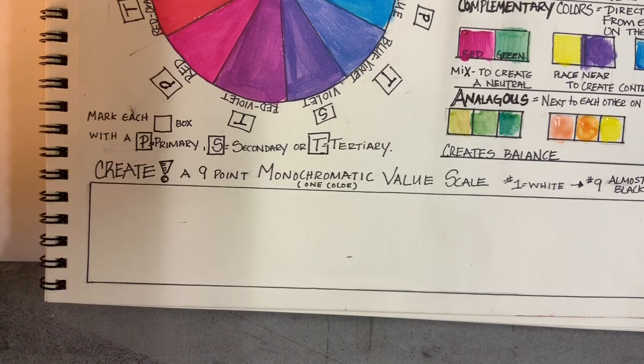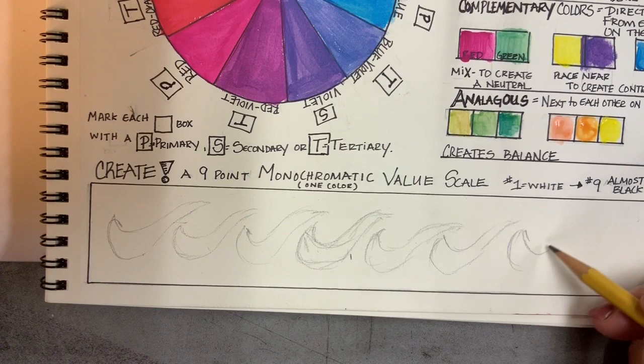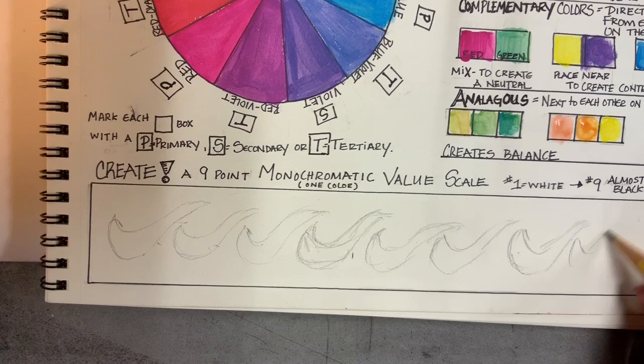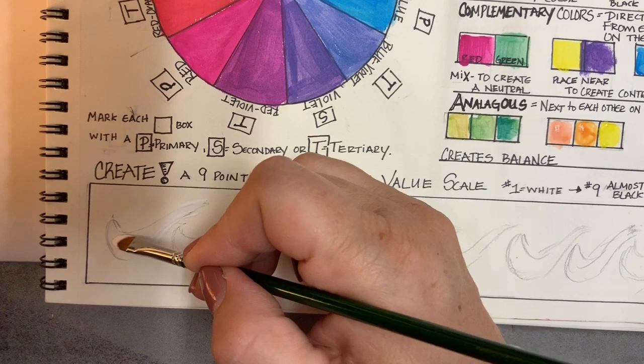Now you're going to create a monochromatic, meaning one color, value scale. One will be white, two through nine—which will be almost black. So I want you to create a little drawing of nine of the very same things. I did a little bit of a swoosh here. And so I make sure that I have nine of them. And then we're going to start mixing our colors, and we're going to start with just pure white. So that first one gets filled in with pure white paint.